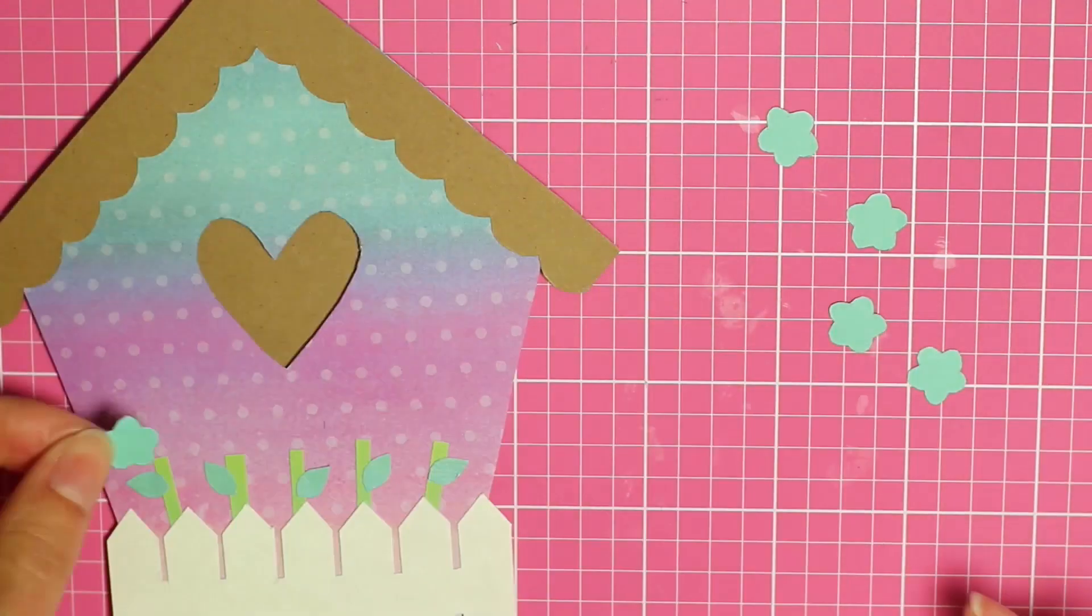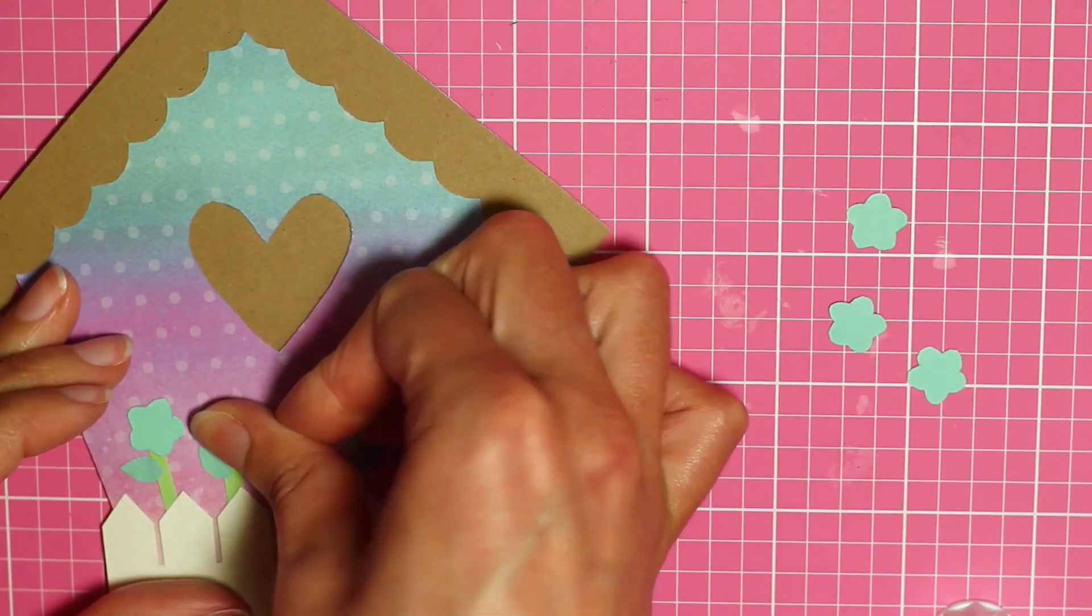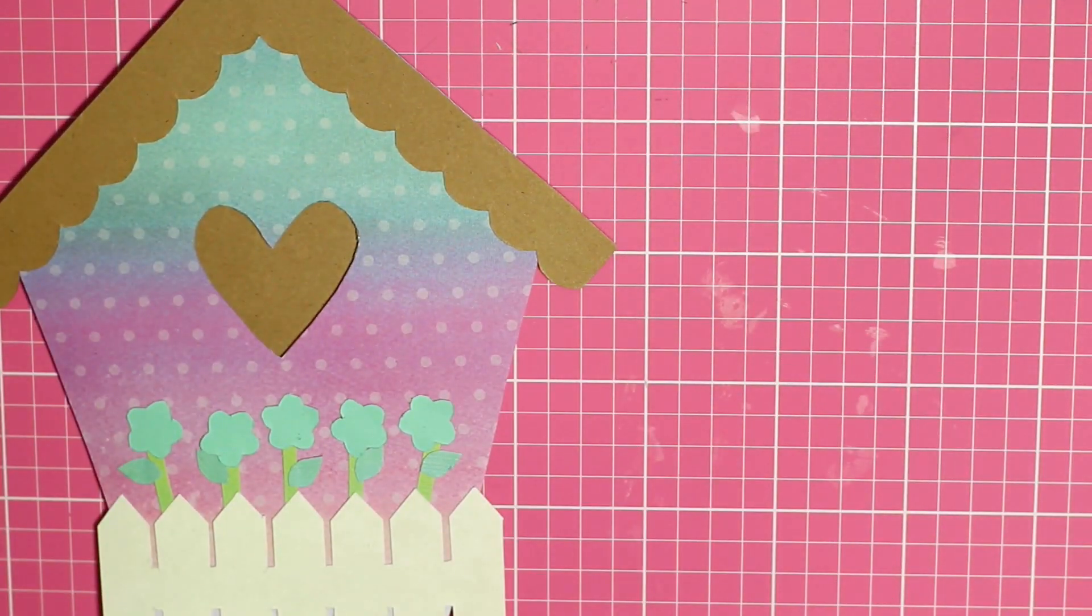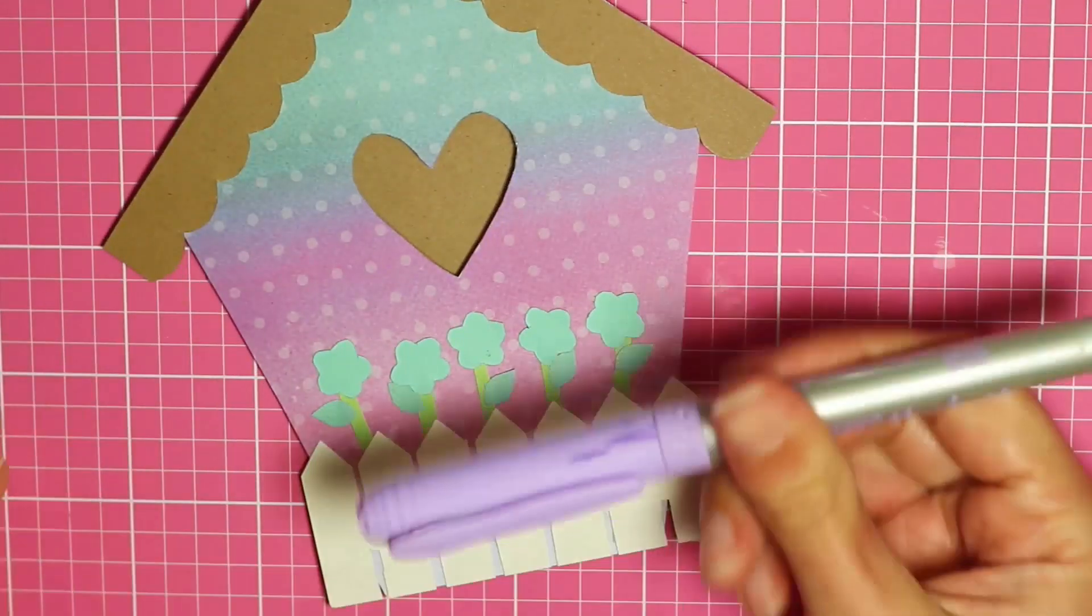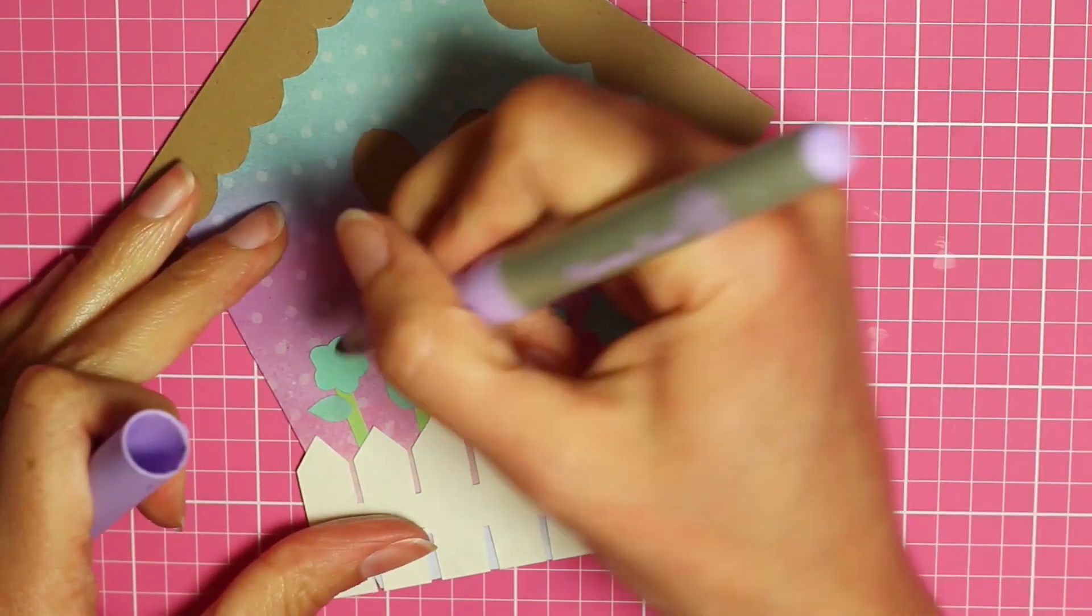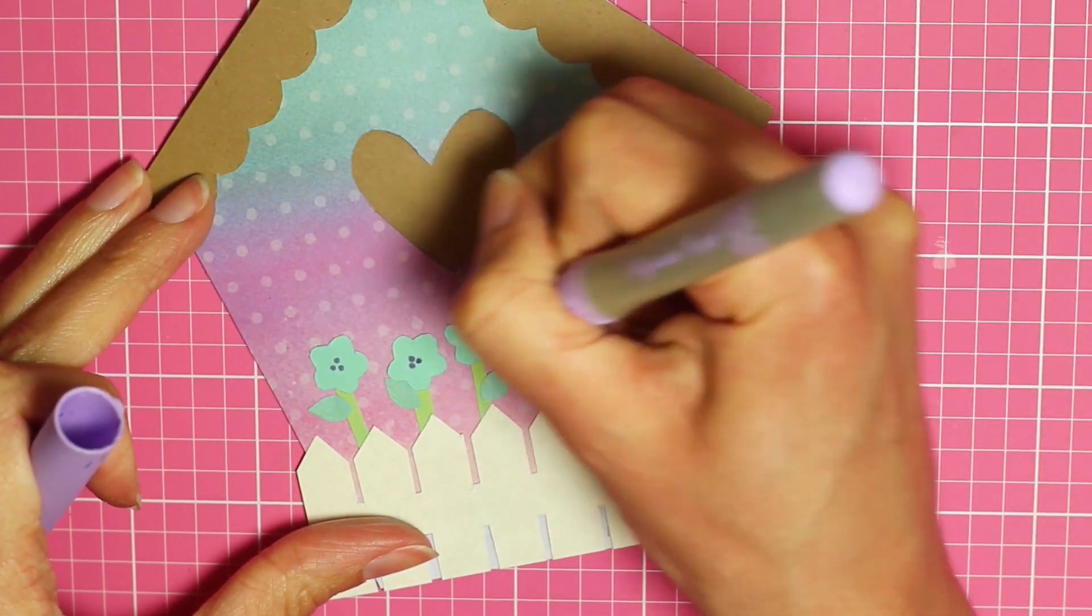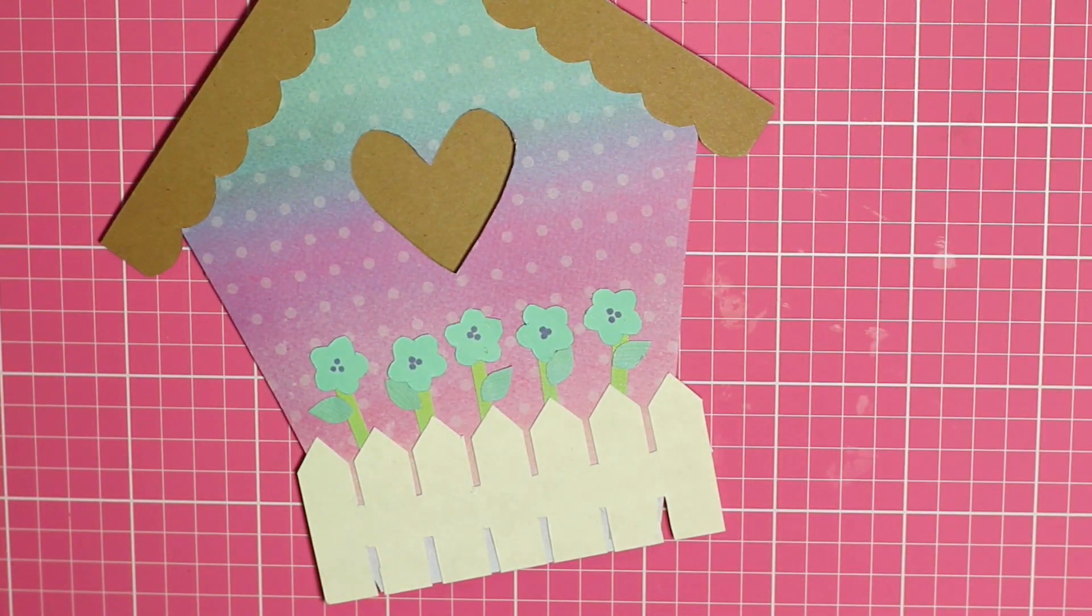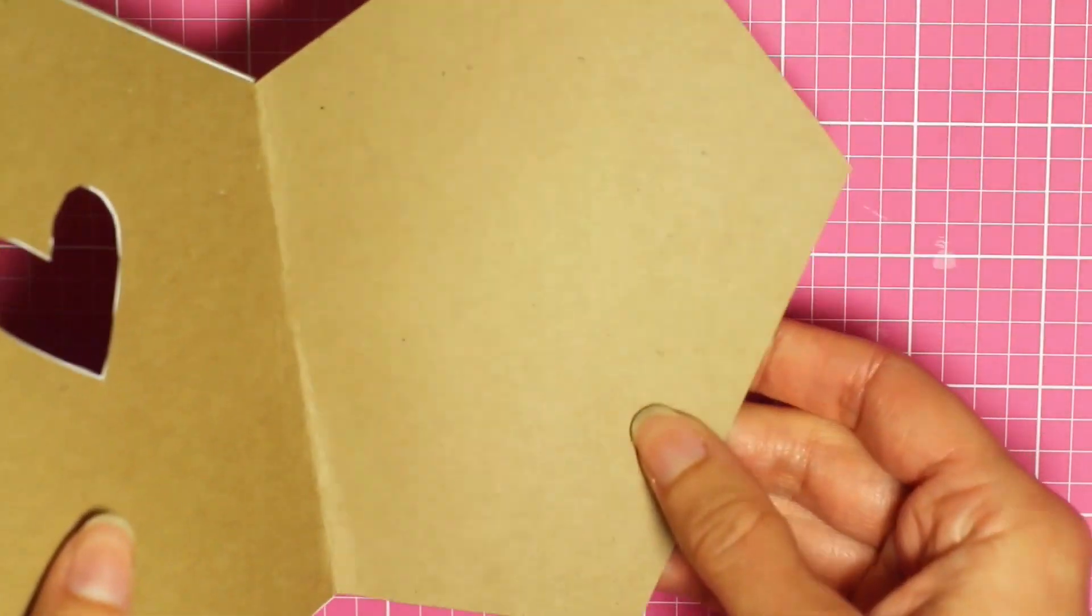And then I cut those out and attach them to the stems. Then I took a permanent marker that is purple and I made three little dots in the center of each of the flowers just to add some more detail. So it looks like this.